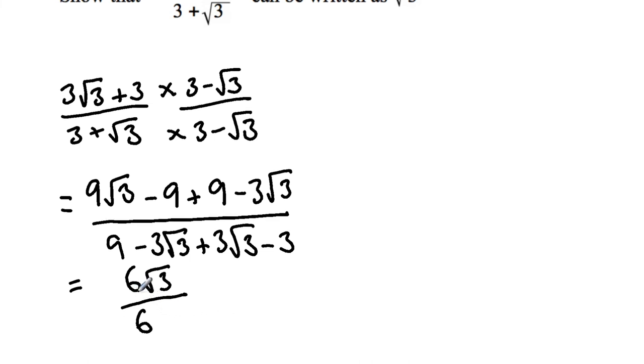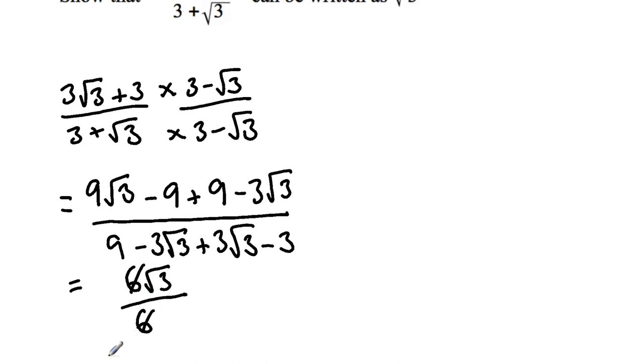So we have 6√3 over 6. We can divide 6 by 6 which gives us 1. Therefore our answer is √3.